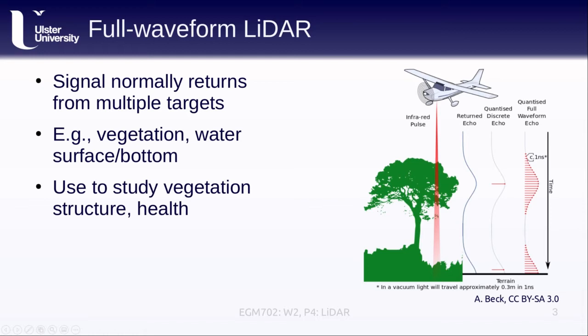We can use this to study vegetation structure and health, because we can actually see what the canopy looks like in terms of its volume, which tells us about the health of the vegetation. And we can also use it to remove the vegetation from our elevation models to create a digital terrain model, where we're only seeing the ground surface without the vegetation or houses or other buildings on top.